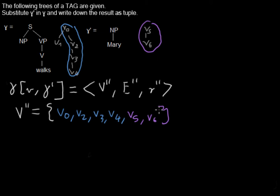Now we are having the full set of nodes for our new tree after the substitution. Now we are writing down all the edges. And the edges are from this tree, the same I marked here. So it's from V0 to V2, from V2 to V3, from V3 to V4. And then from the second tree, we only have V5 to V6.